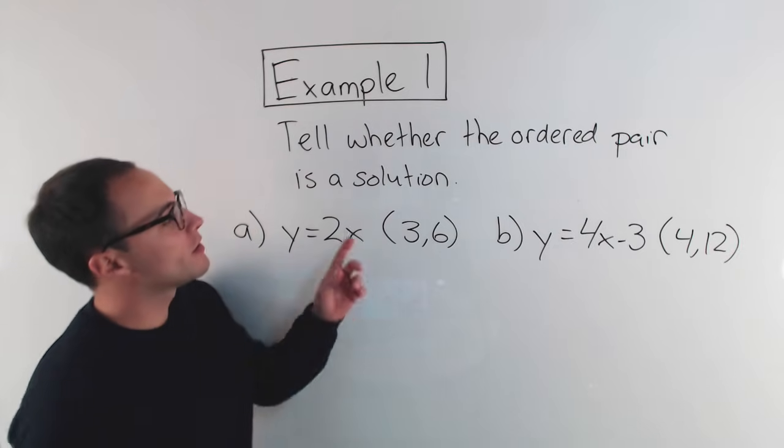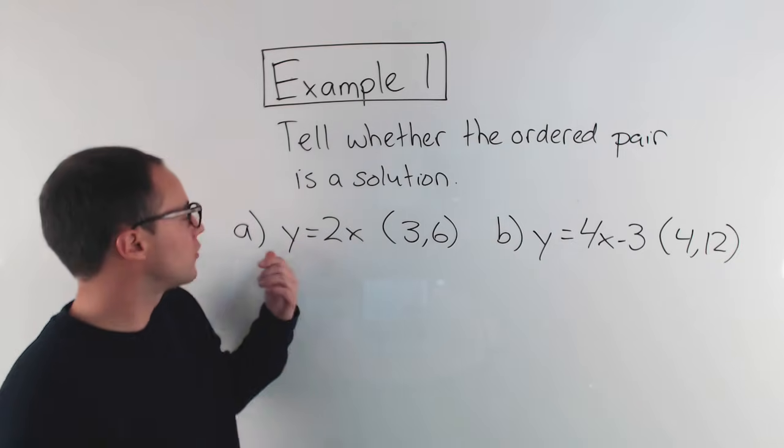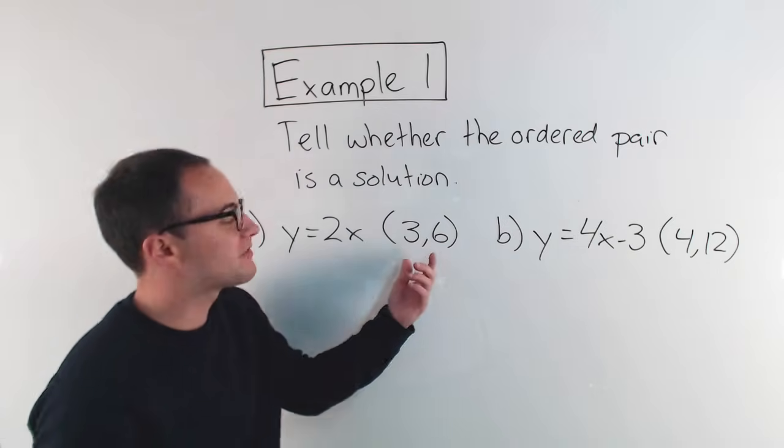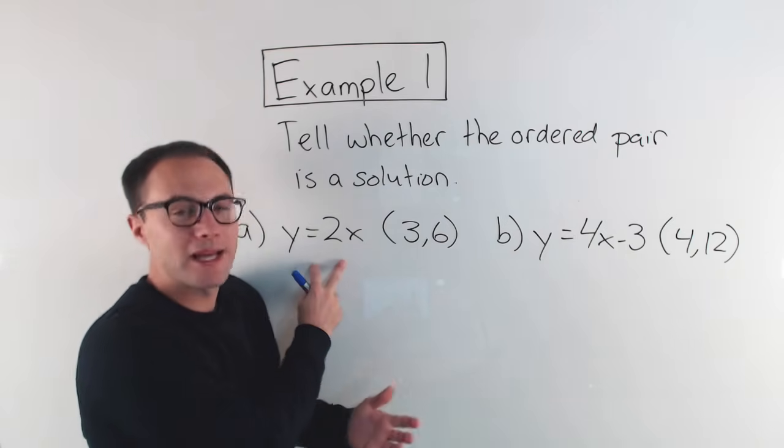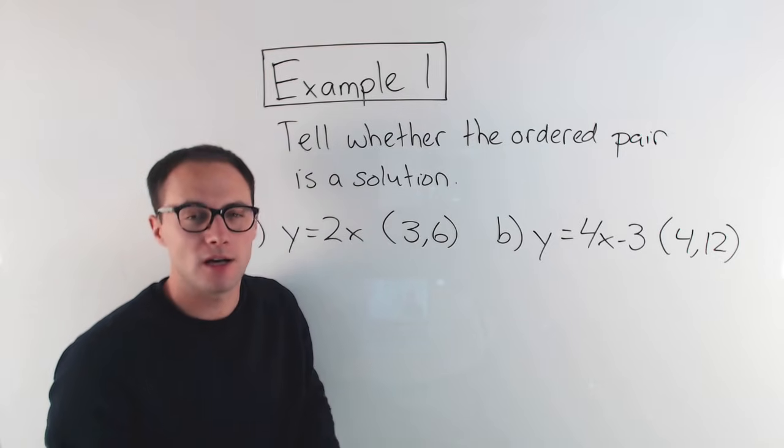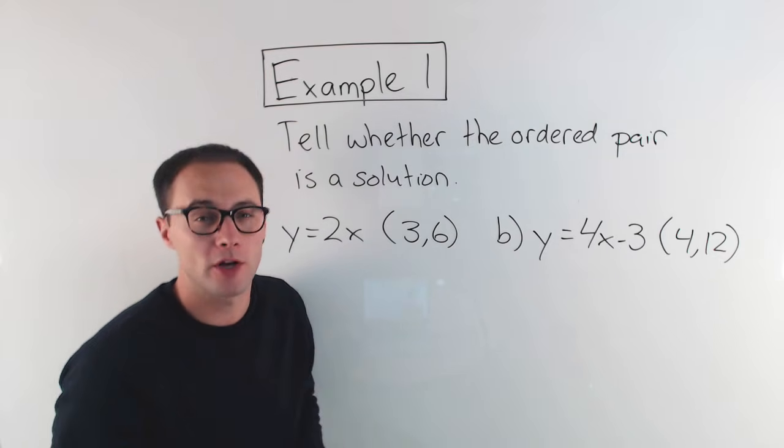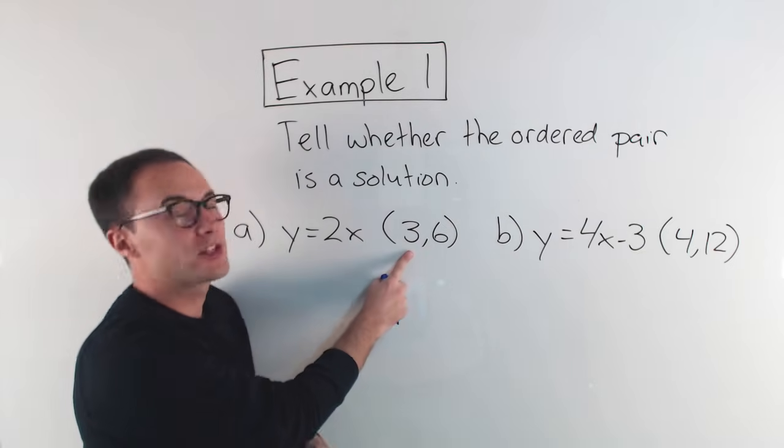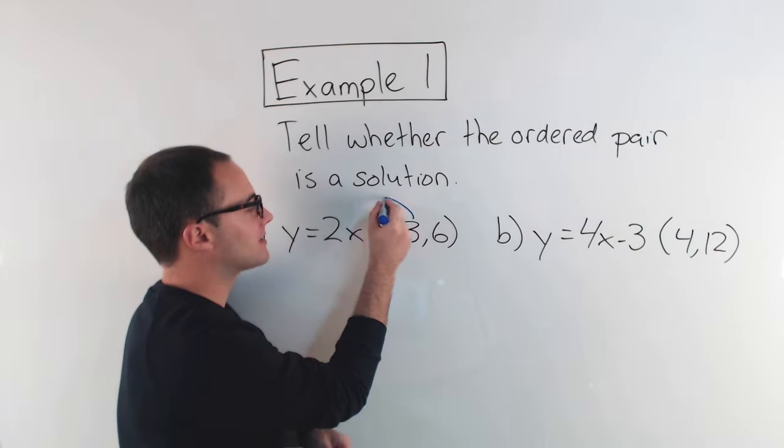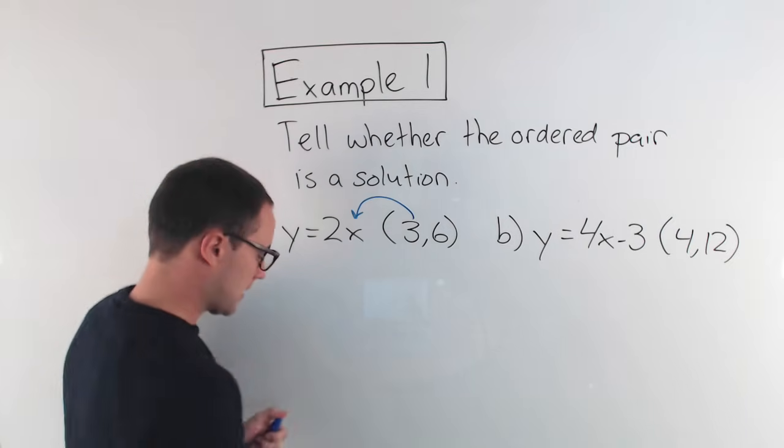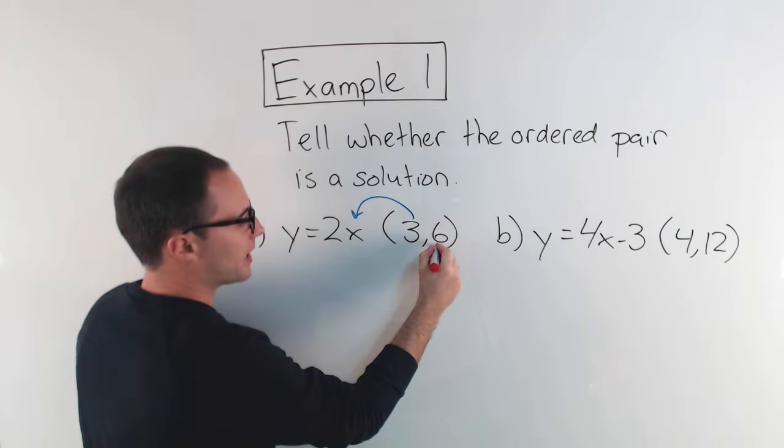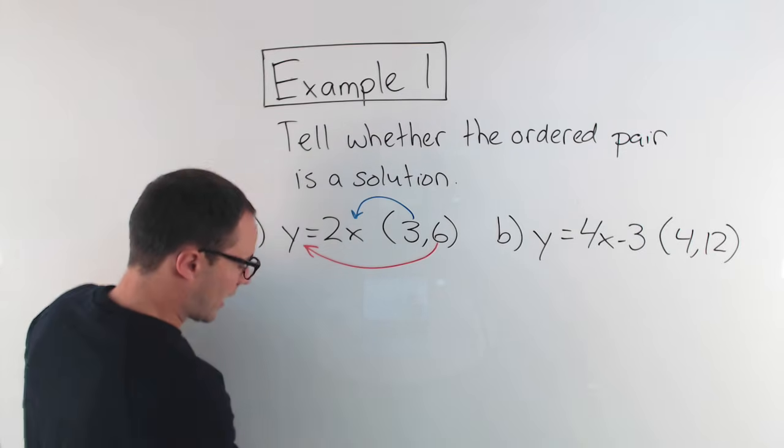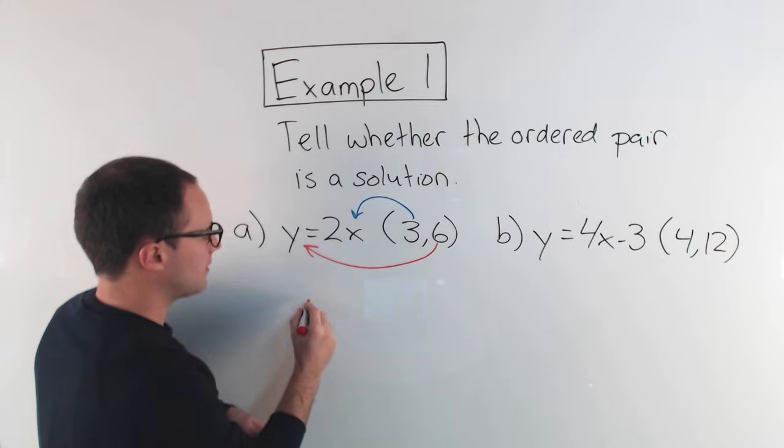Example one. Tell whether the ordered pair is a solution. So for my first one, y equals 2x, my ordered pair is 3,6. So I'm going to see if that's a solution. If it's a solution, it should make this equation true, just like a solution to an equation with just one variable. So to check, all I have to do is substitute. This 3 is my x-value, so I'm going to substitute that 3 in there. And this 6 is my y-value, so I'm going to substitute it in for y.